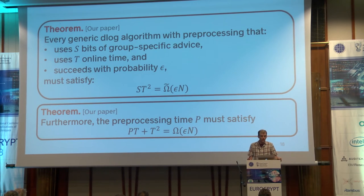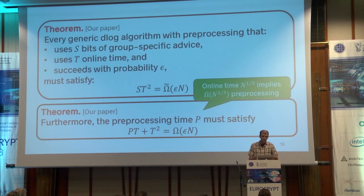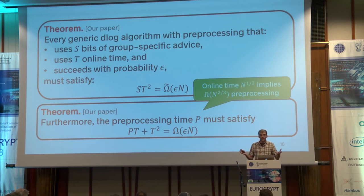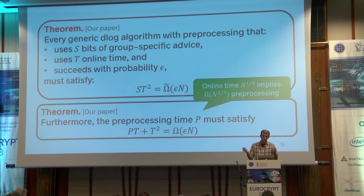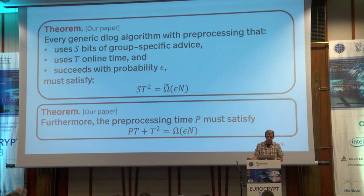We also proved lower bounds on the preprocessing time as a function of online time. To make it concrete: if you want the algorithm to run in online time cube-root-of-n, this implies the preprocessing time must be at least n to the two-thirds. There's a smooth trade-off: the faster you want your online phase, the slower your preprocessing phase will be. There's no way around that, at least for generic algorithms.